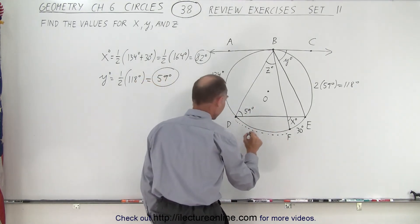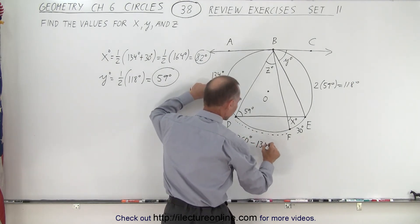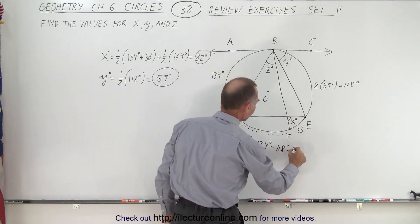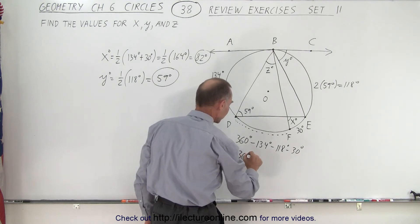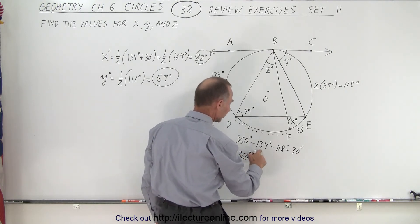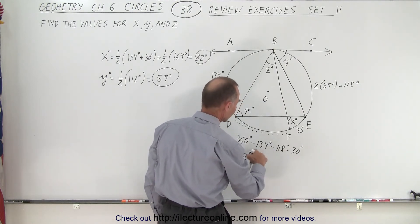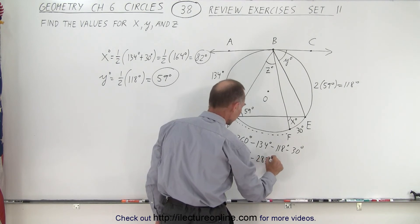So that means that this here would be 360 degrees minus 134 degrees minus 118 degrees and minus 30 degrees. So this is equal to 360 degrees minus, adding these together, that gives us 144, 152, 182. So 260, 70, 82, so 282 degrees.